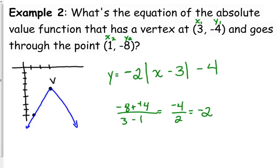But, it is not necessarily because of this. If we had given you the point 5, negative 8, we would have gotten positive 2 to test the slope. But, it would still be negative 2 in front of the absolute value.